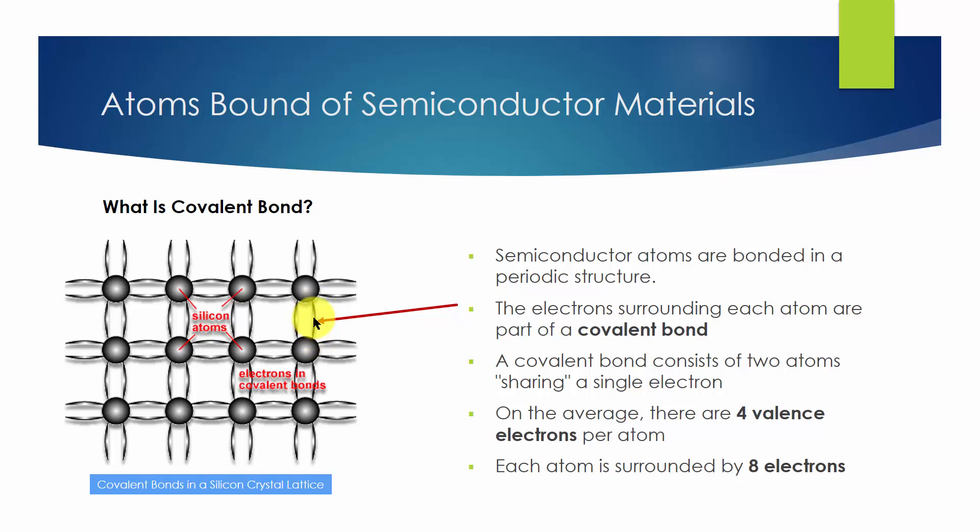On average, there are four valence electrons per atom, such that each atom is surrounded by eight electrons which are shared among the neighbors. The electrons in the covalent bond are held in place by this bond, such that they are localized to the region surrounding the atom.